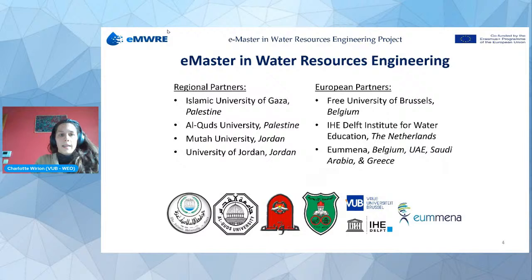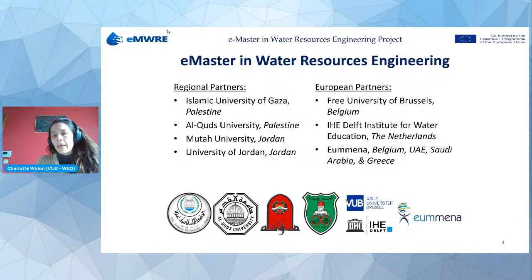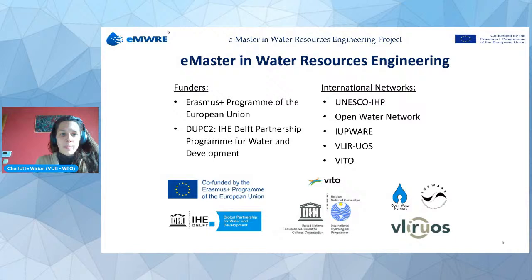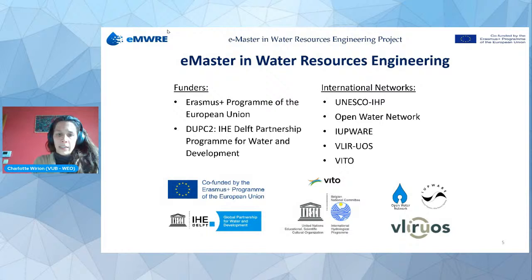The project partners include two regional partners: the Islamic University of Gaza in Palestine and Al-Quds University in Palestine, as well as Muta University and the University of Jordan in Jordan. The European partners are the Free University of Brussels in Belgium, IHE Delft Institute for Water Education in the Netherlands, and OIMENA in Belgium, Greece, Saudi Arabia, and the UAE. Funding comes from the Erasmus+ program of the European Union and the DUPC2 program from IHE Delft.